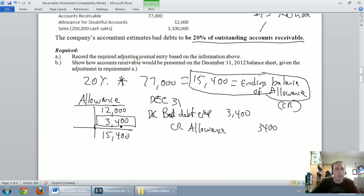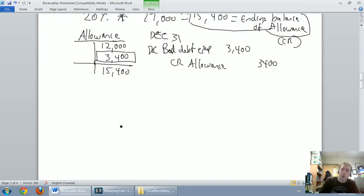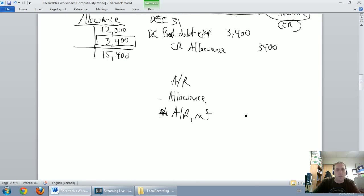Now what does this look like in terms of balance sheet presentation? Well, again, we should be getting in the habit of this. It's accounts receivable minus the allowance equals our net, I'll say it this way, our AR net. So what's our company's net accounts receivable? Well, let's figure it out.